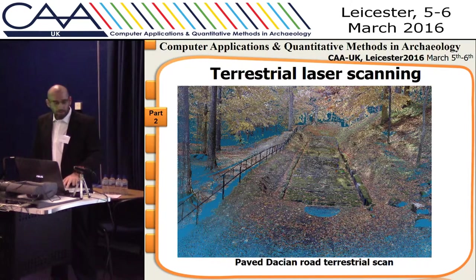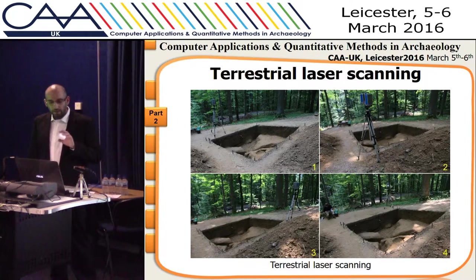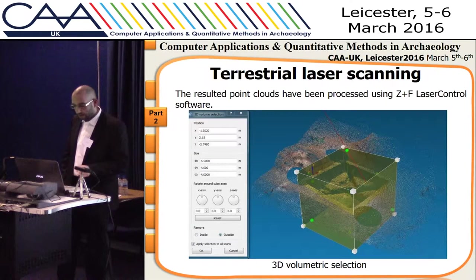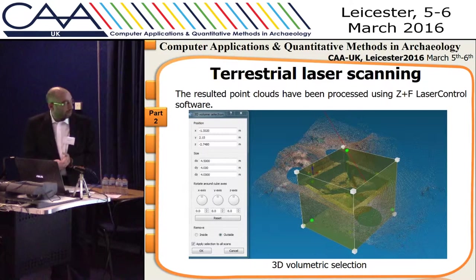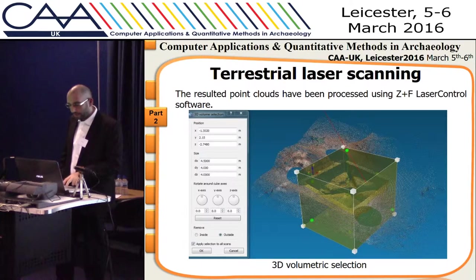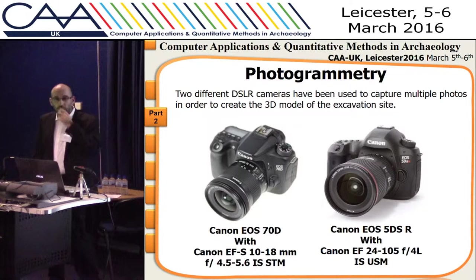This is an image of the paved Dacian road, and this is a terrestrial scanning of a digging excavation. This is a cutout because the scanner requires a full 360 degrees, but we were only interested in the geometry of the excavation area. This is the result of the model.